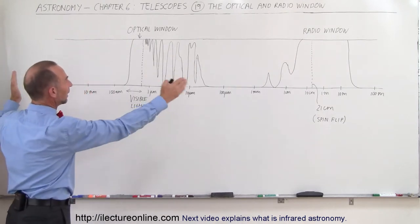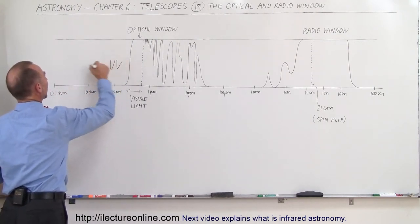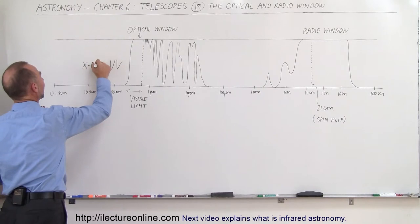Here we have what we call a representation of the spectrum. To the left here we have UV, X-ray, and gamma ray radiation.